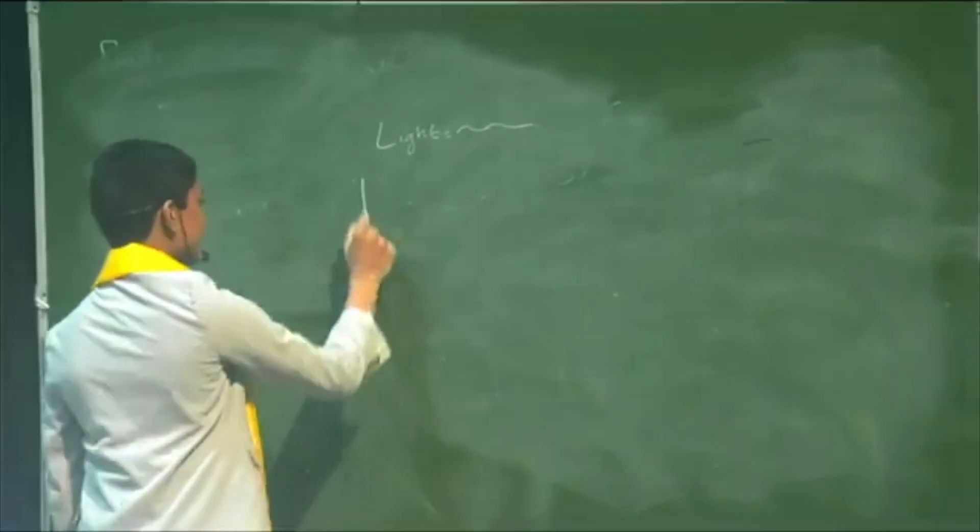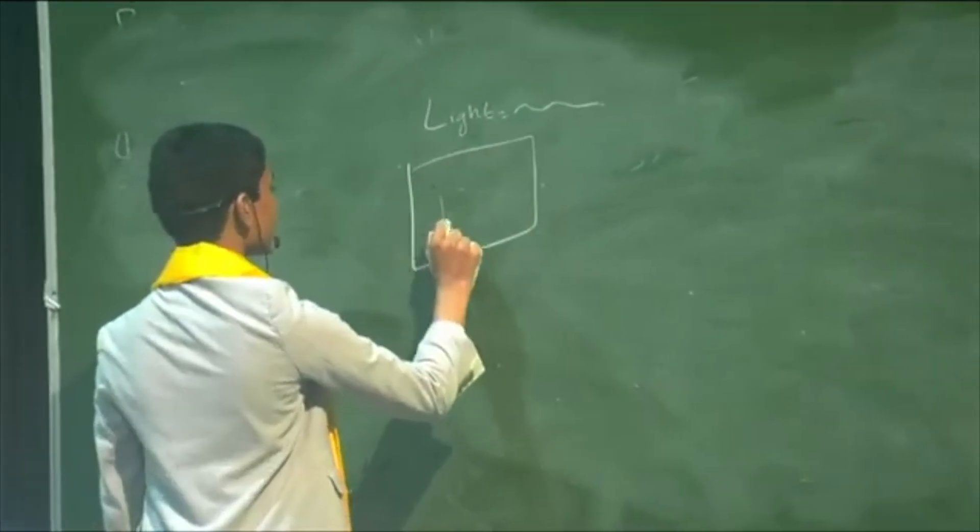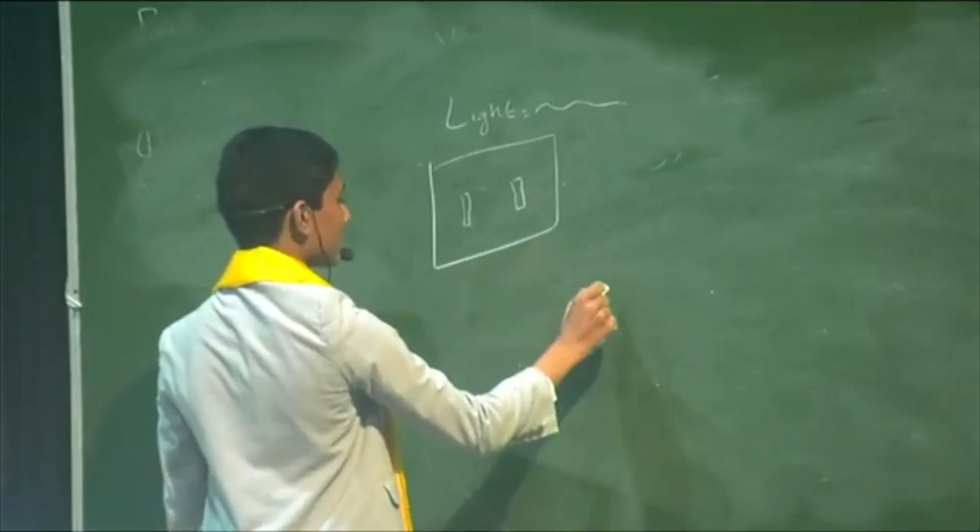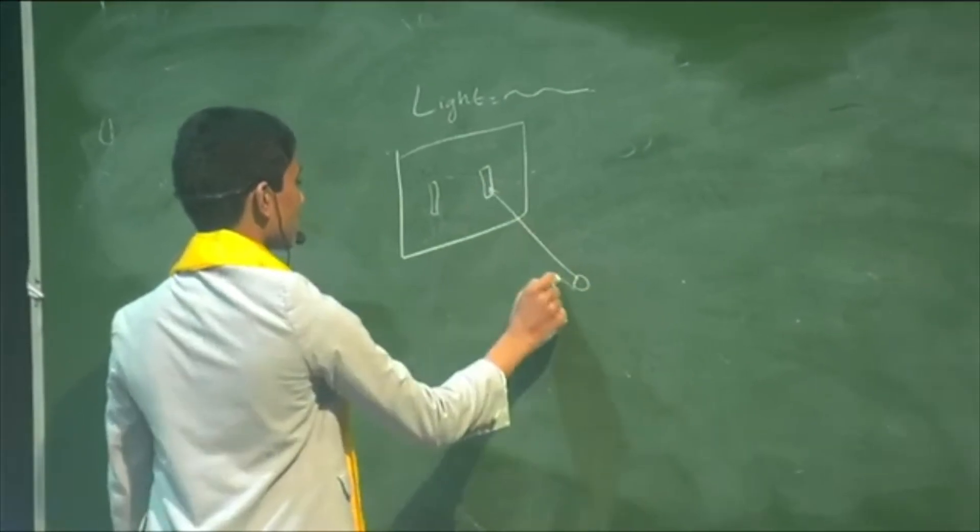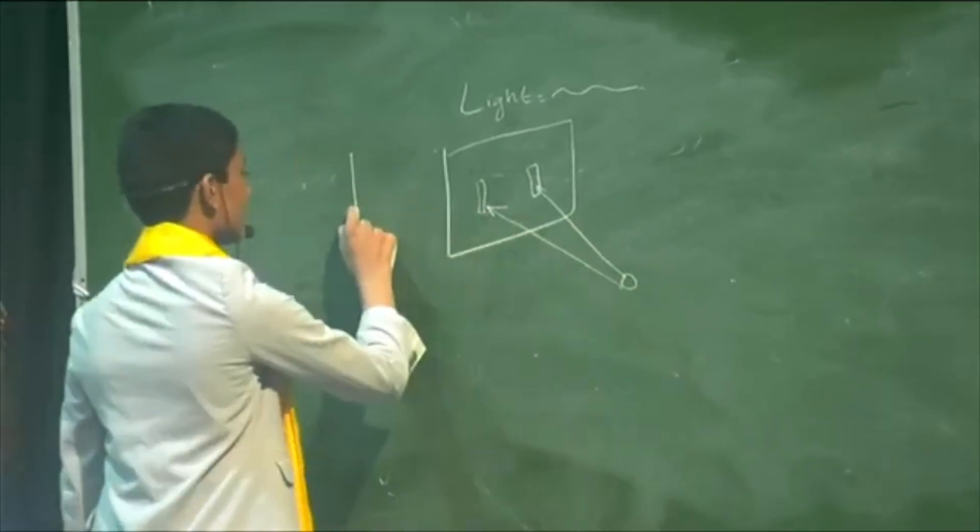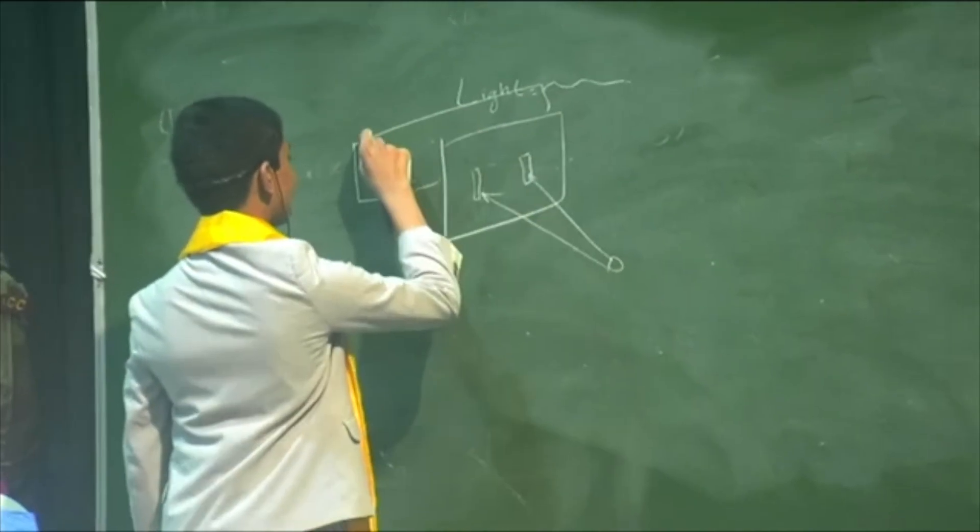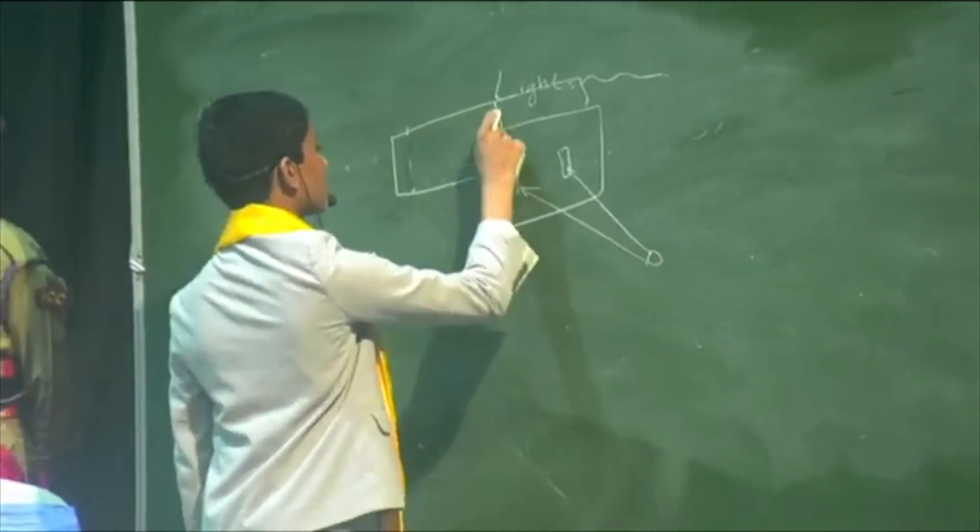But in one specific experiment, the double slit experiment, it was shown to behave like a particle, in that it gave the same interference patterns as a particle would.